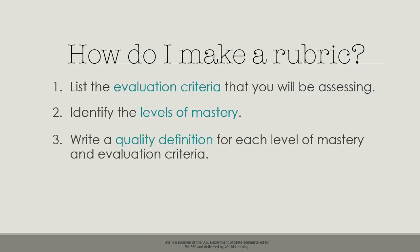Then, you must write quality descriptions for each level as it relates to each evaluation criteria. The definitions need to be about observable and measurable behavior. This will help distinguish between the levels and help both learner and educator accurately and fairly assess progress. For example, 'thinks critically' is too vague. The level of detail you include depends on your students and context.